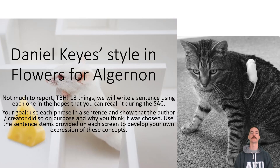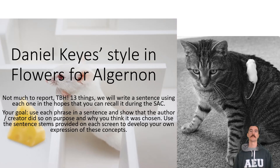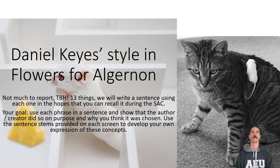This video covers Daniel Keyes' style in Flowers for Algernon. There are only 13 things to cover, and even those were a bit of a stretch. Most of them come from a master's degree in TESOL — essentially linguistics. In essence, what we're doing is finding better words than simply saying he writes dumb, then smart, then dumb again at the end. Keep that in mind: knowing basically what these phrases mean will be more than enough.